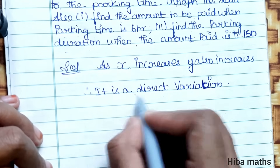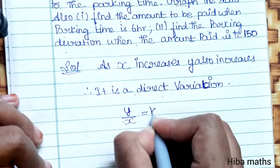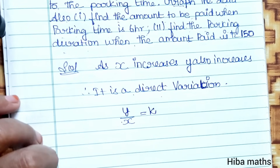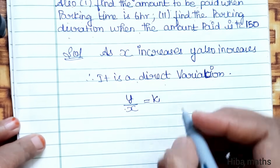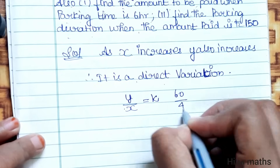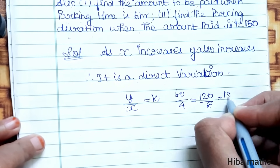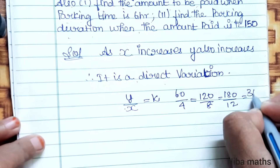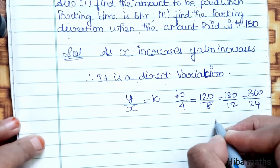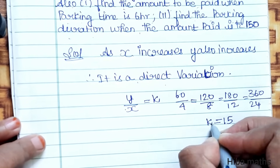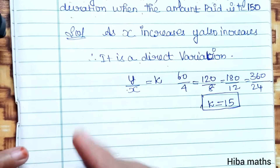This is direct variation, where y divided by x equals k. We compute: 60 by 4, 120 by 8, 180 by 12, and 360 by 24. Dividing all of these gives the answer 15. So the constant of variation k equals 15.